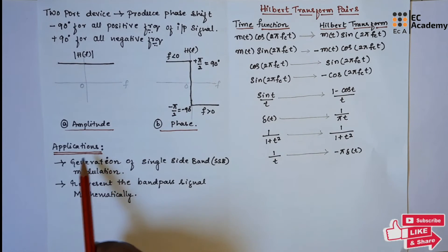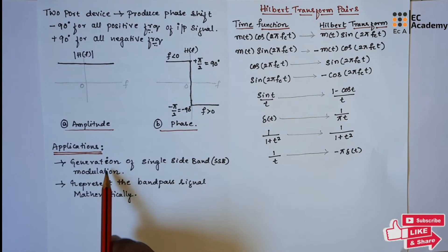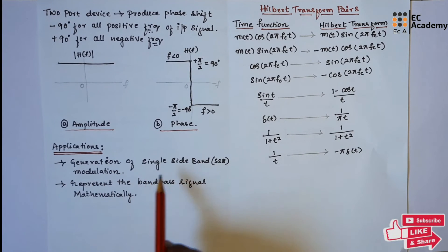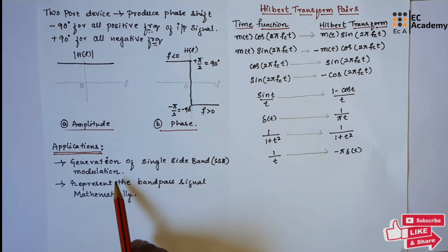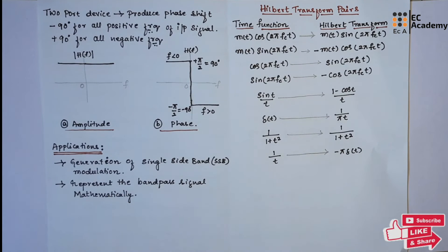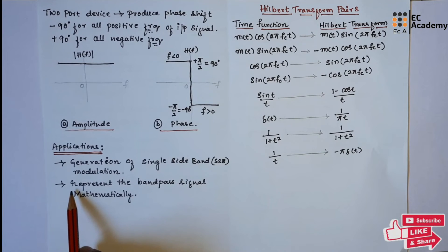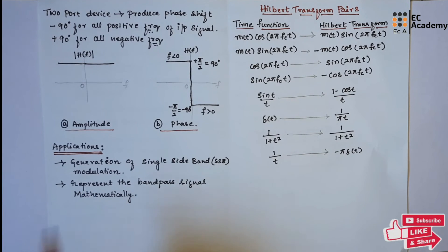Now let us see the applications of Hilbert transform. The Hilbert transform is useful in the generation of single sideband (SSB) modulation, and it is also used to represent band-pass signals mathematically.